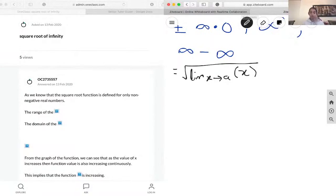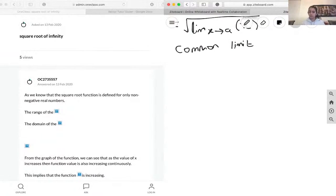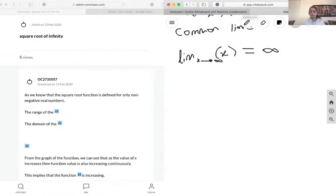Next, we're going to apply the common limit rule, which basically states that the limit of x as it approaches infinity of x is equal to infinity.